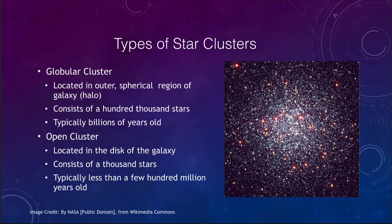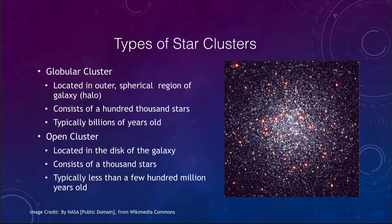There are a couple of different types of clusters. One type is the globular cluster. These are located in the outer region of our galaxy, called the halo — the spherical region. They can contain hundreds of thousands of stars and are typically many billions of years old, making them very old clusters.